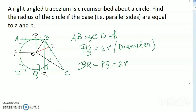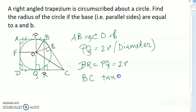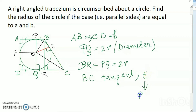By construction, BC is a tangent to the circle. The point of contact is E, and OE is the radius of the circle. Since a tangent is perpendicular to the radius at the point of contact, angle OEC equals 90 degrees.